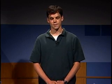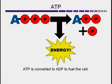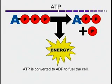ATP stands for adenosine triphosphate. When a cell needs energy, it breaks off a phosphate group, shown in red, leaving adenosine diphosphate. A lot of energy is produced by this reaction, which the cell can use for its activities. The job of mitochondria is to turn ADP back into ATP so your body can keep moving and keep smelling things.